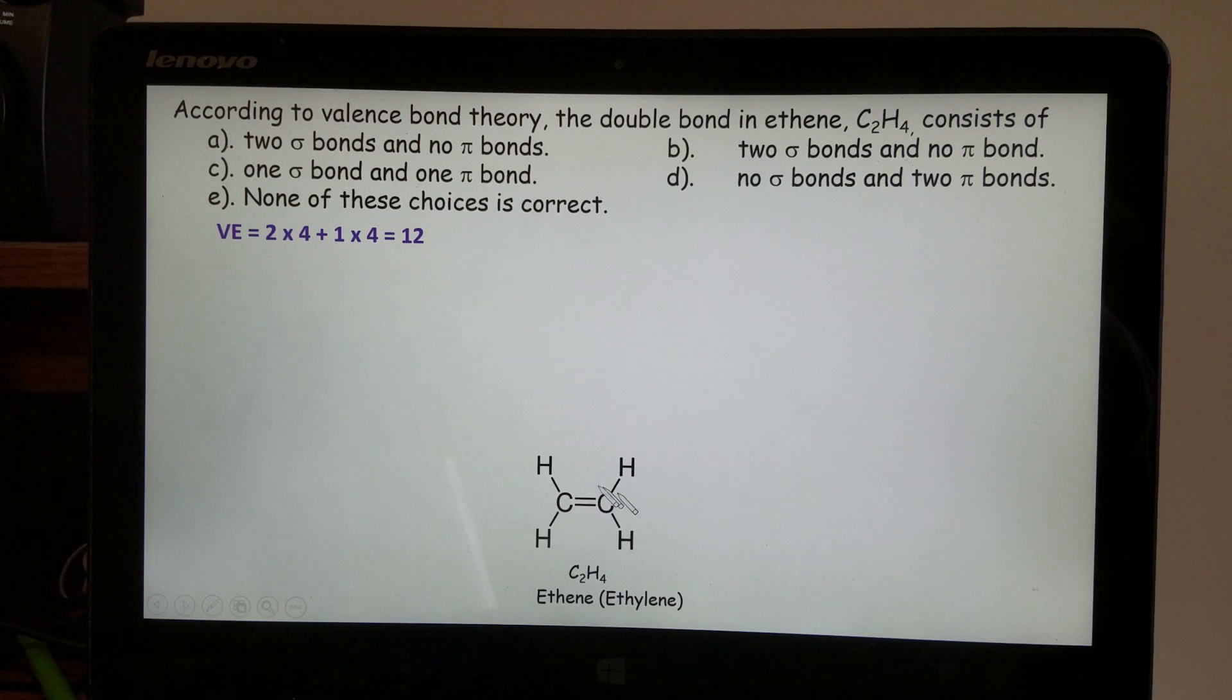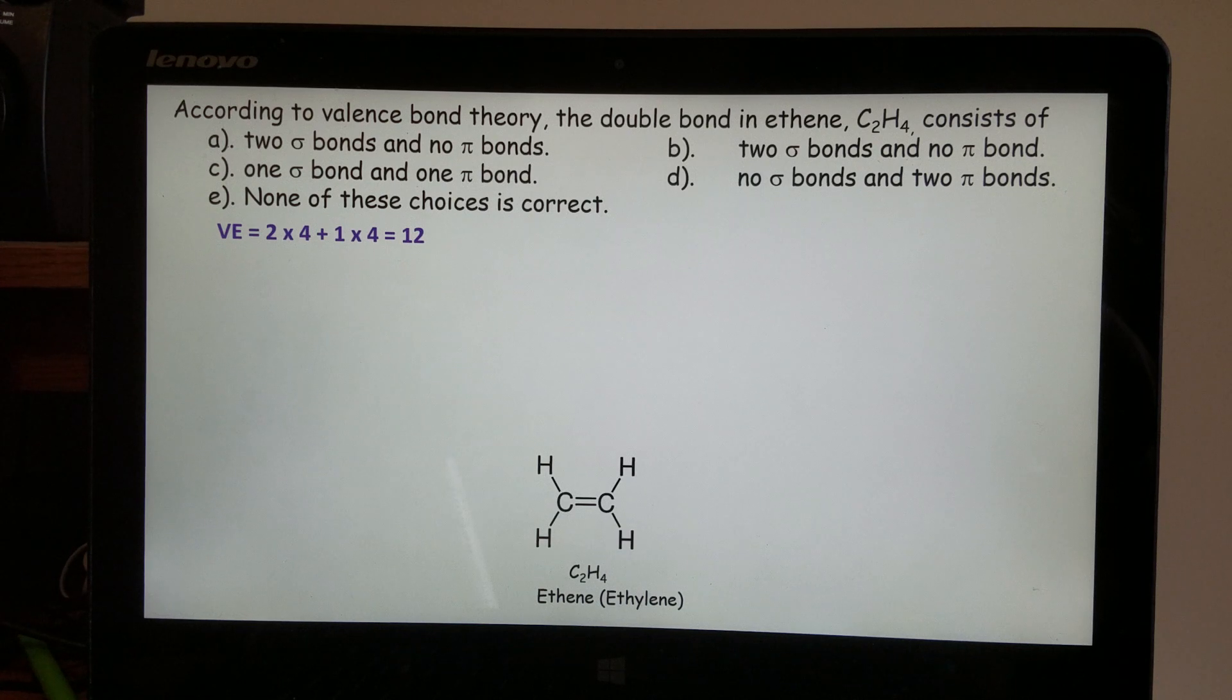Then we can draw the structure. Let's count the number of electrons. We have one, two, three, four single bonds, that's eight electrons. Then we have one double bond.